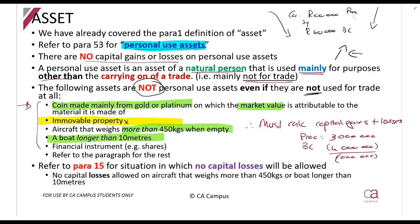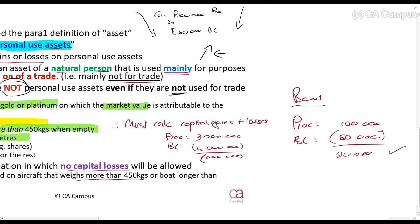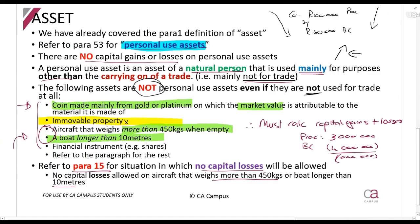That capital loss is allowed — but paragraph 15 says you cannot claim a capital loss for an aircraft that weighs more than 450 kg or a boat longer than 10 meters. So for example, if you sell a boat with proceeds of 100,000 and base cost of 80,000, that's a capital gain of 20,000 and it will be taxed. But if proceeds are 100,000 and base cost is 180,000, that is a capital loss which will not be allowed. Capital losses are good for a taxpayer because they reduce other capital gains — but the source says: we'll tax you if you make a gain, but we will not allow you to claim a loss.